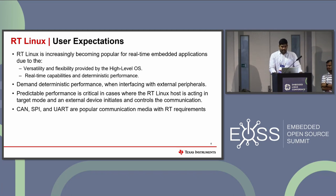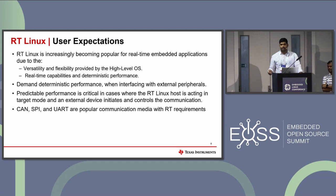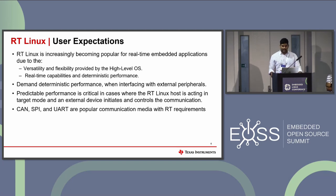So why do we care about these latencies? RT-Linux is increasingly used in embedded use cases where a traditional MCU was being used. The expectation is to have MCU-like real-time performance so that they can have deterministic performance along with the versatility and flexibility provided by a high-level OS. This demand for deterministic performance is very high when interfacing with external peripherals in an embedded system, especially when the RT-Linux host is not the controlling entity for the external peripheral. Common embedded buses like CAN, SPI, and UART are the ones that require this deterministic performance.